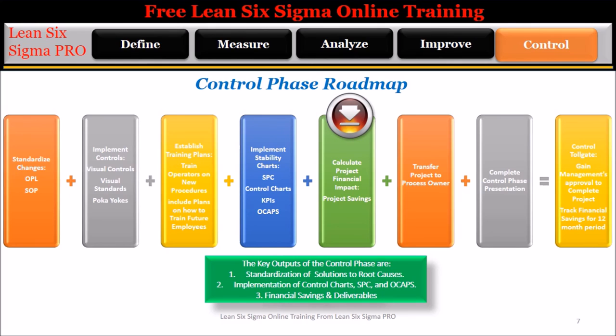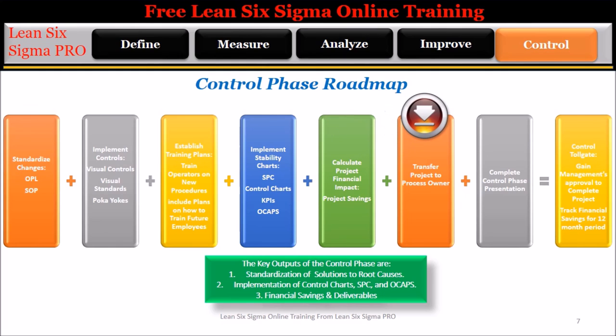Step 5: Calculate the financial savings for the project and verify whether the team has satisfied the customer's expectations. Step 6: Transfer the project to the process owner.